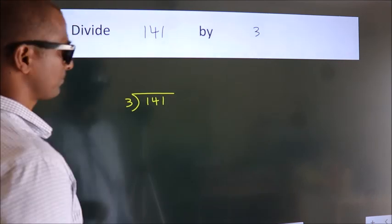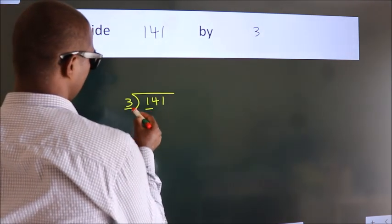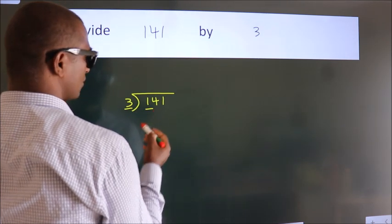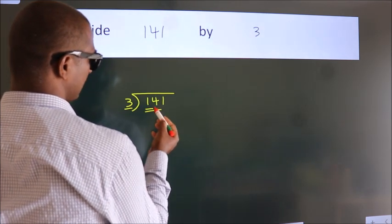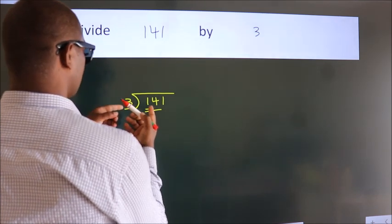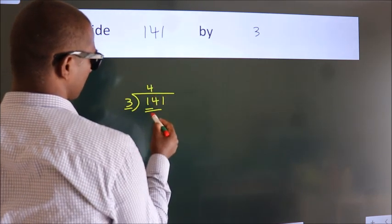Next. Here we have 1, here 3. 1 smaller than 3, so we should take 2 numbers, 14. A number close to 14 in 3 table is 3 fours 12.